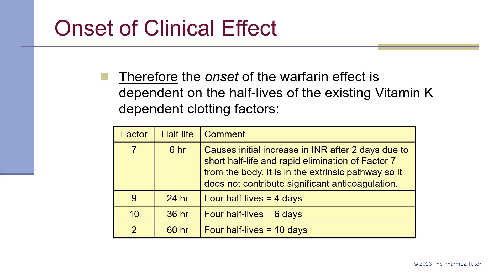This table lists the half-lives of the 4 clotting factors. It takes about 4 half-lives to eliminate each one. Factor 7 has the shortest half-life of 6 hours, so it is eliminated quickly within 1 to 2 days. However, it will take longer to eliminate the other clotting factors, which have much longer half-lives. Overall, it will take at least 4 days to begin to see the full effect of warfarin suppressing the clotting factors.